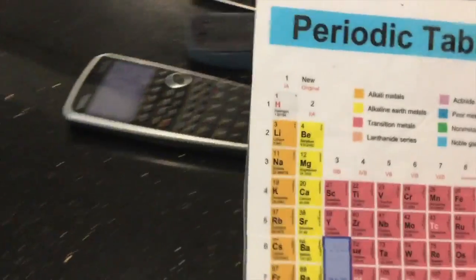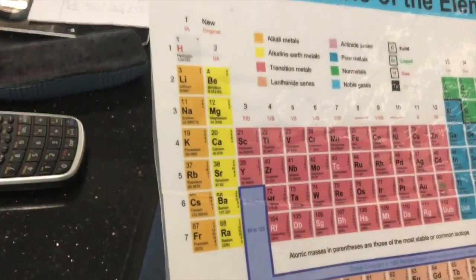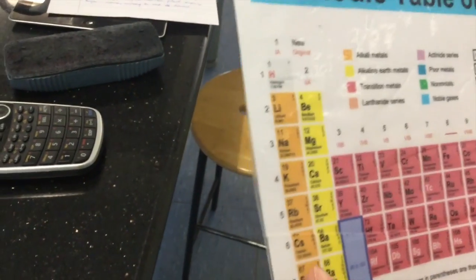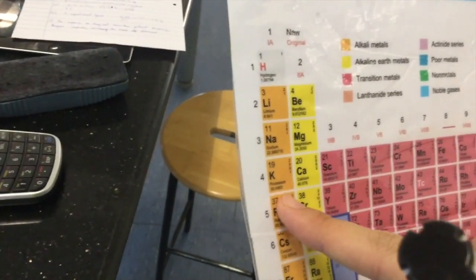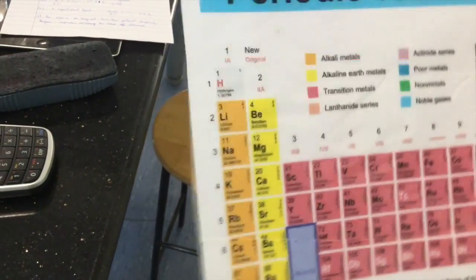In the periodic table, it's this one, 39. Group one, that's the alkaline metals. So 39, that's potassium.